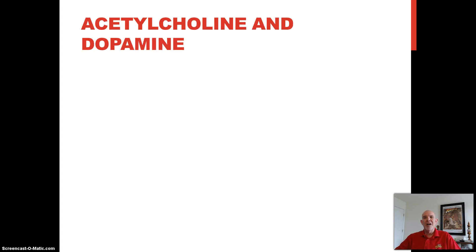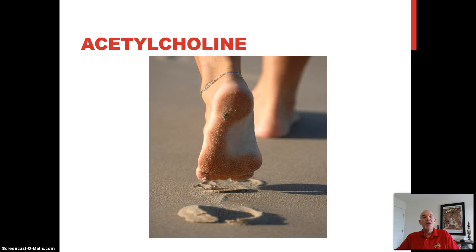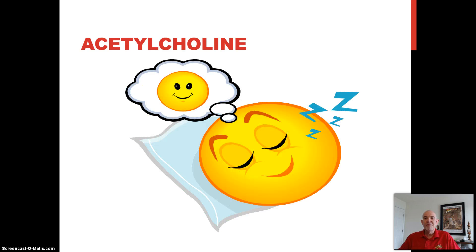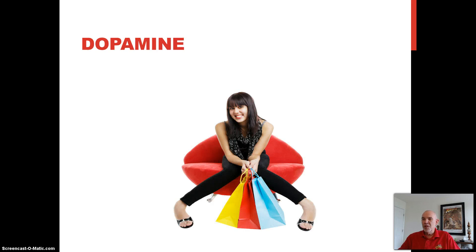I want to focus briefly on just a couple of neurotransmitters: acetylcholine and dopamine. They're all very important, but we just have time to look at these two. We know that acetylcholine facilitates voluntary movement, stimulates learning and memory, and is involved in sleep and dreaming. We know that dopamine is associated with pleasure, and neuroscientists have nicknamed it the feel-good juice in the nervous system.